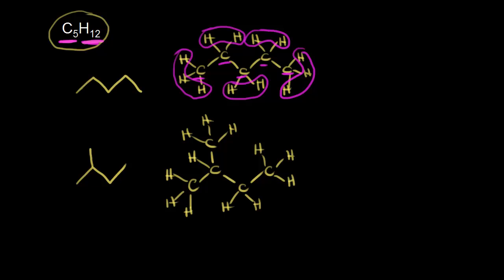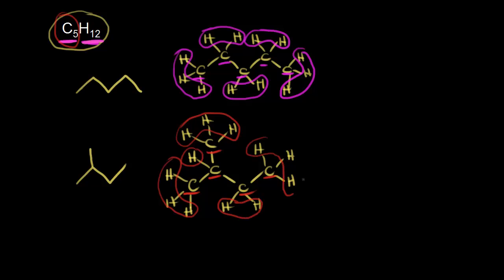Let's count up our atoms. We have one, two, three, four, five carbons — so that's C5. For hydrogens: three plus three gives us six, plus one gives us seven, plus two gives us nine, and three more for a total of 12. So C5H12 is the molecular formula for this compound. These two drawings represent two different molecules. Both have the molecular formula C5H12, but they differ in how those atoms are connected — they differ in structure, so we call them structural isomers of each other.